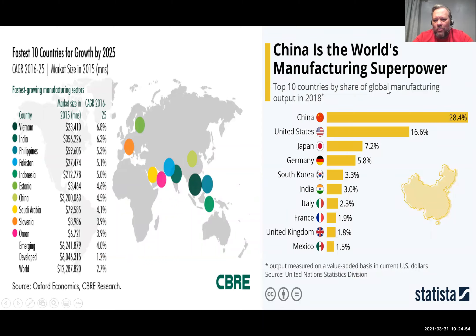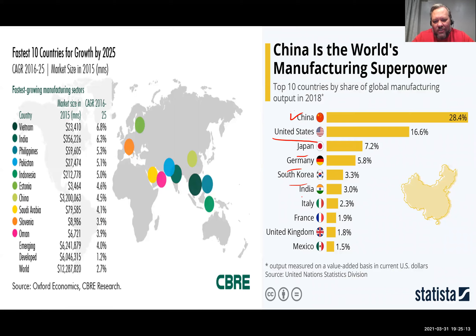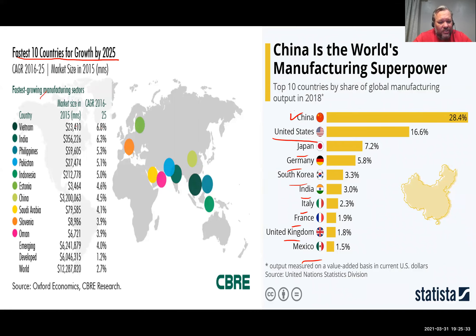Looking at the top 10 countries by share of global manufacturing in 2018, China is the biggest and the US is second. So we do still produce things here. Japan, Germany, and South Korea also rank highly. Manufacturing is a huge economic driver even though services take up a large share of the economy.